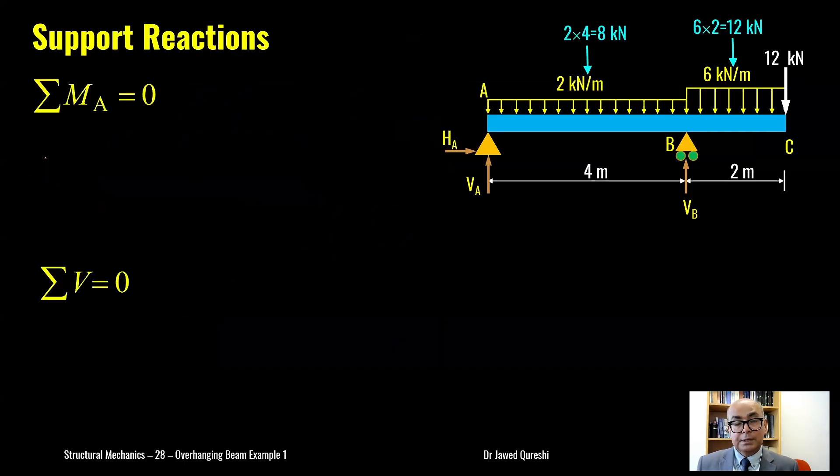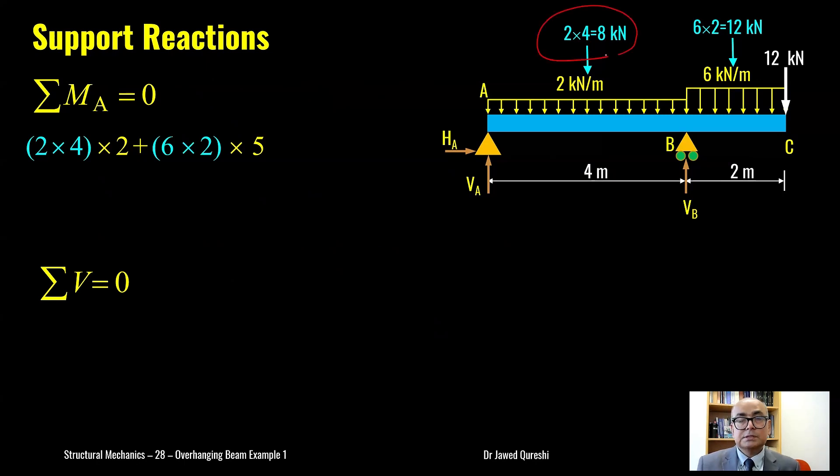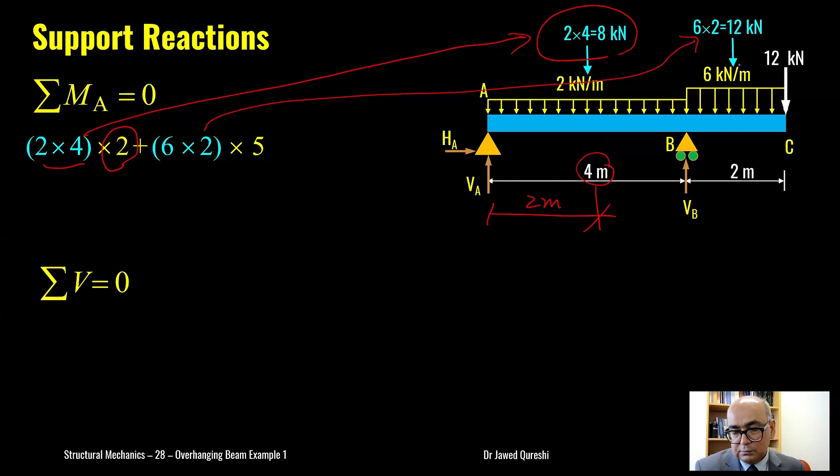Then I will say summation of moment at A equal to zero and summation of vertical forces equal to zero. When we say summation of moment at A equal to zero, this 8 kN load which is the total load due to uniformly distributed load of 2 kN per meter, this will be acting at half of 4 meters. So half of 4 meter is going to be 2 meters from left. So that's the reason we have this 2 meters. 2 times 4 is the total load due to UDL and you can see with the help of this color combination that it is this load. The second load is this one, the uniformly distributed load on overhang portion which is 6 times 2 and it is acting at half of this 2 meter distance and the distance will be 5 meters from here.